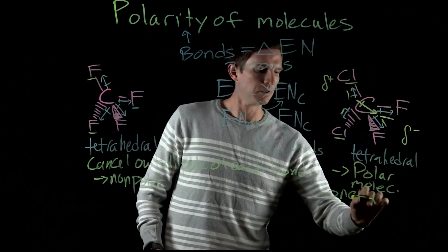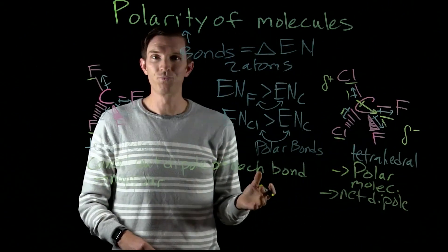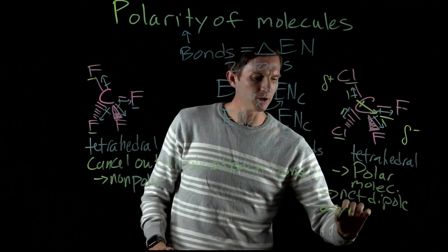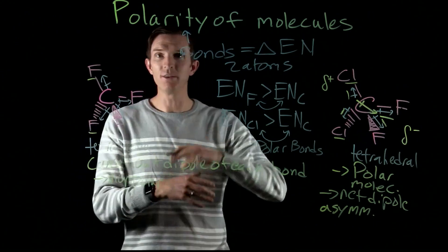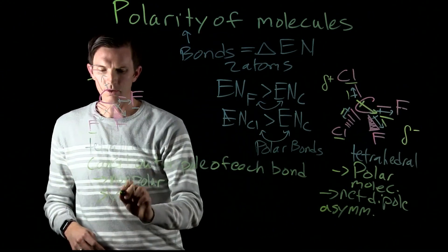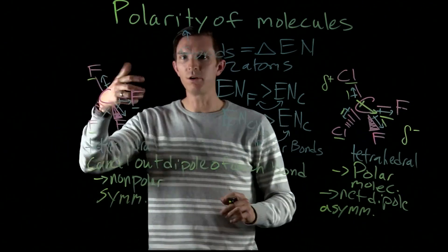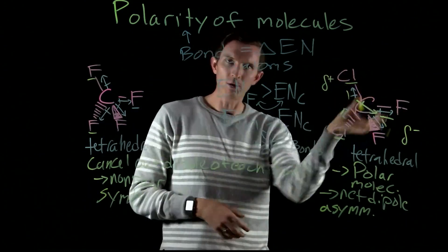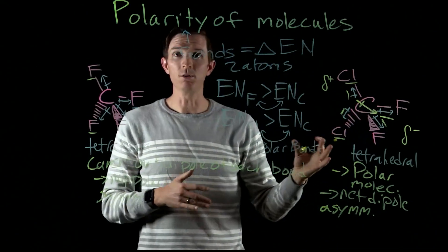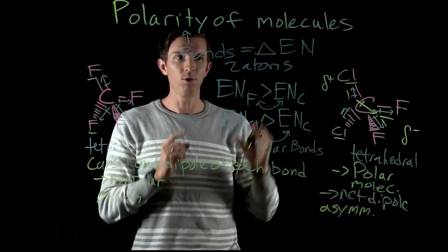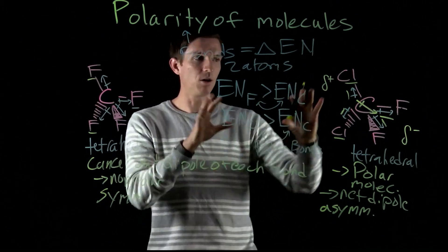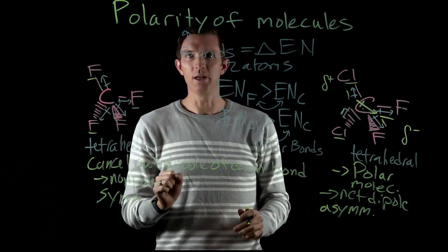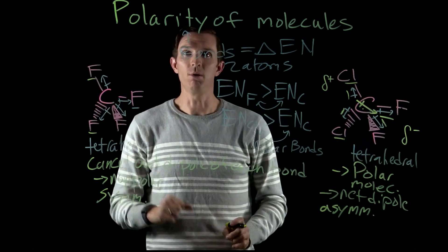A useful way to visually assess a molecule is to consider its geometry and symmetry. CCl2F2 is asymmetrical — if you rotate it, it looks different depending on orientation, since chlorines are on one side and fluorines on the other. CF4, by contrast, is symmetrical — it looks the same no matter how you rotate it. To predict polarity, examine bond polarity and molecular geometry together, then determine whether there is a net dipole moment or not. That tells you if a molecule is polar or nonpolar.